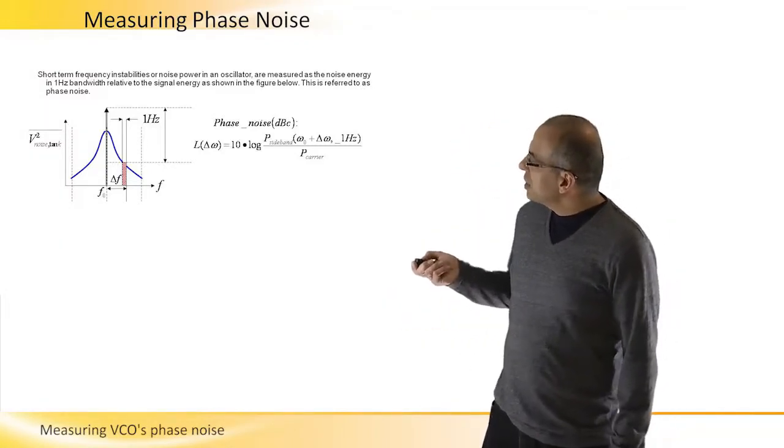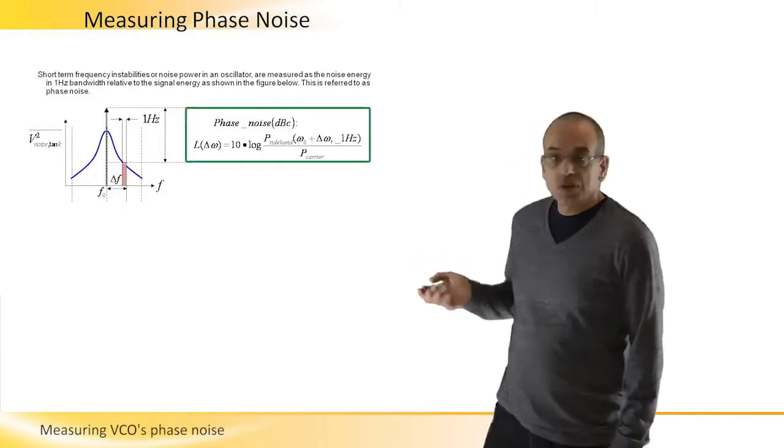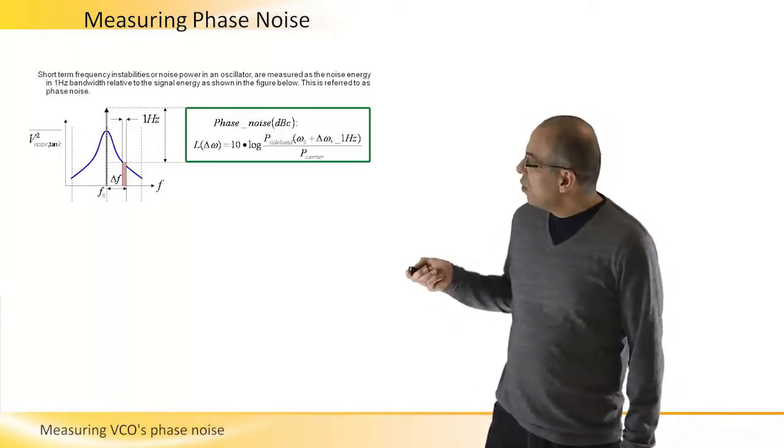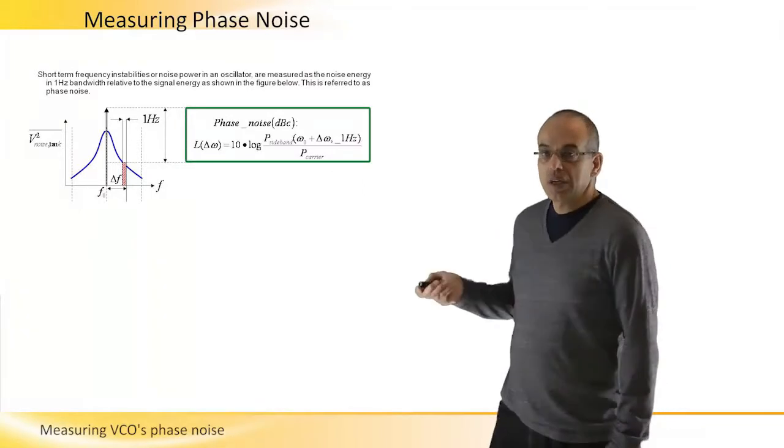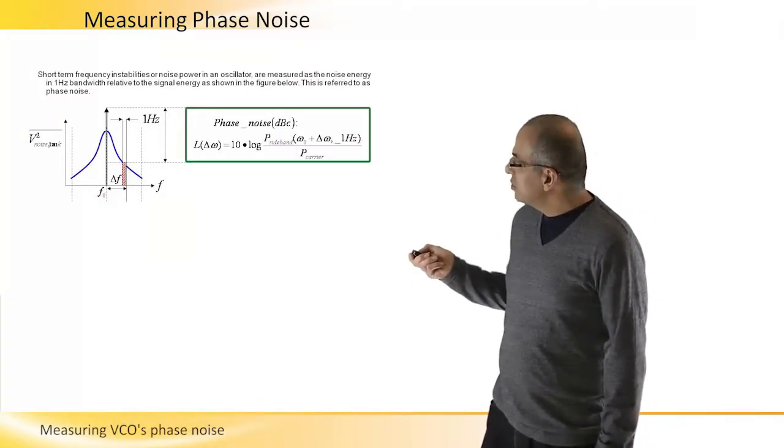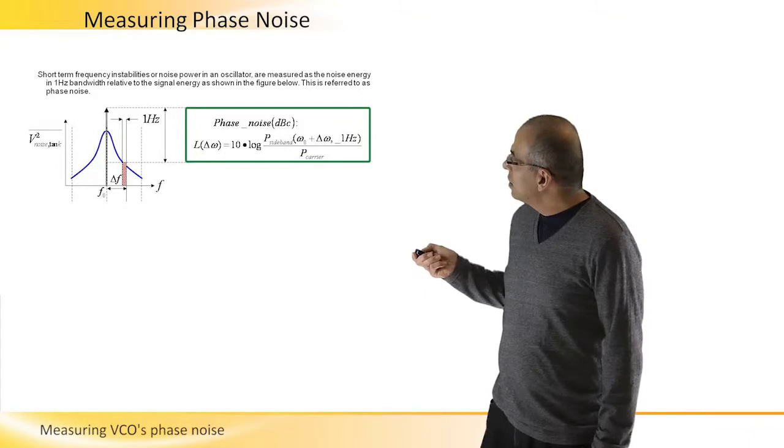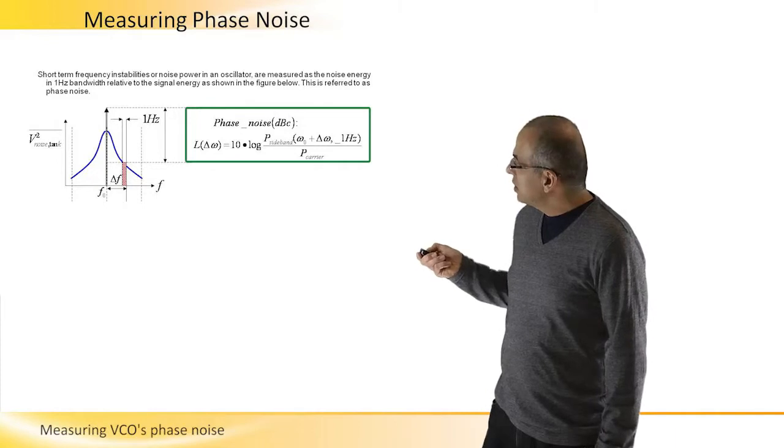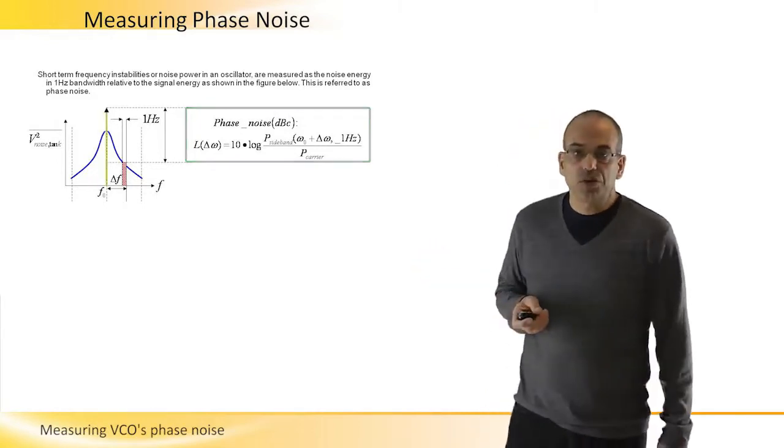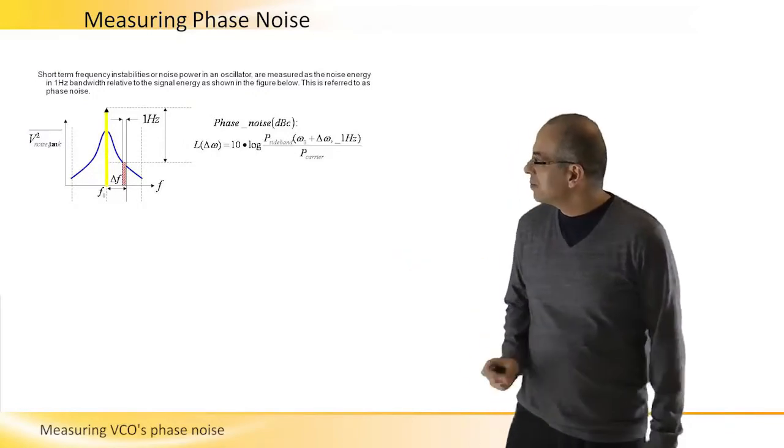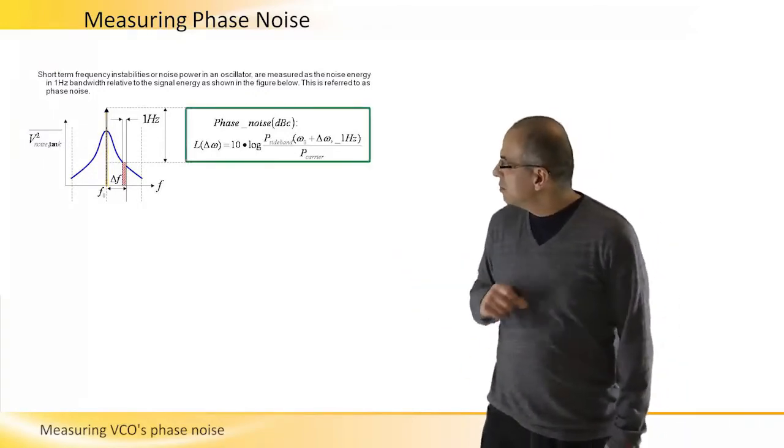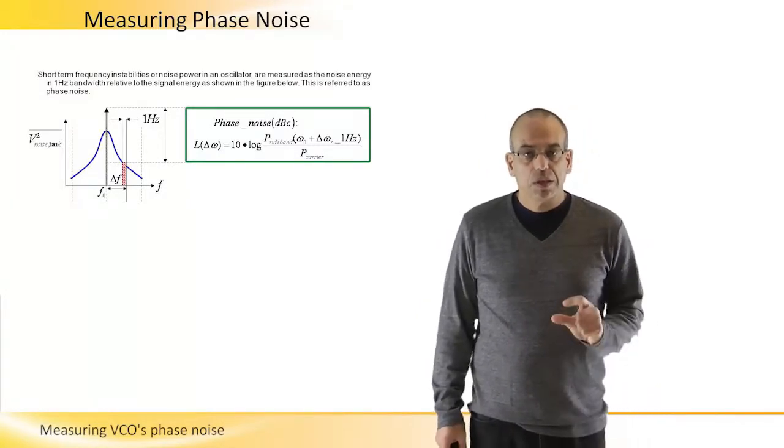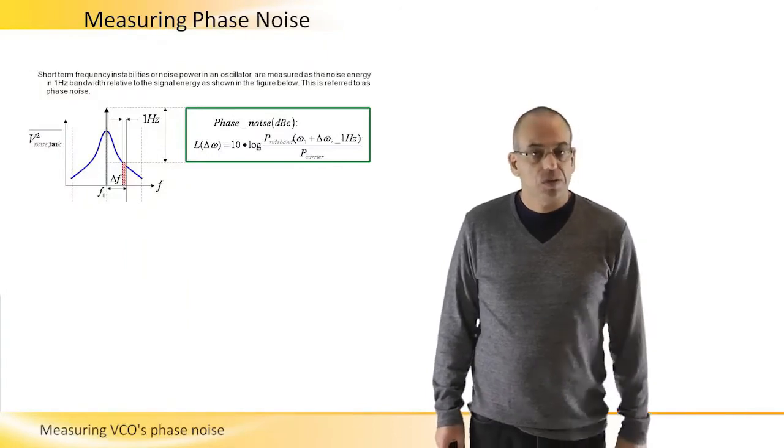It will be 10 times the logarithm of the power in one sideband of one Hertz, which is Delta W Hertz far away from center frequency. So we take this power and we normalize it to the power of the carrier, which is at center frequency. This is the simple mathematical expression describing the phase noise in dB.